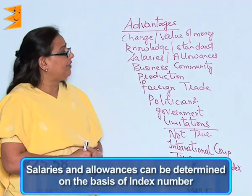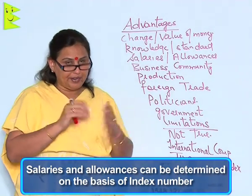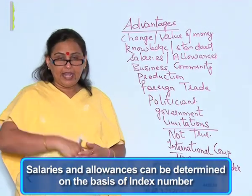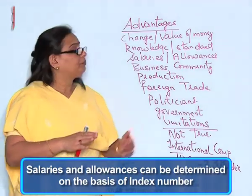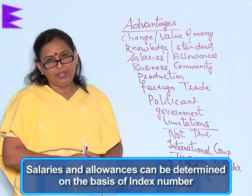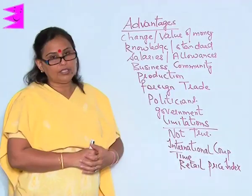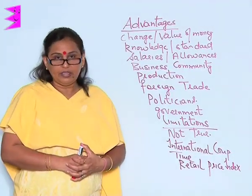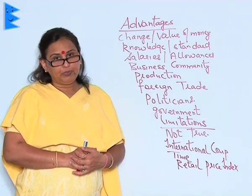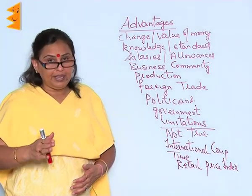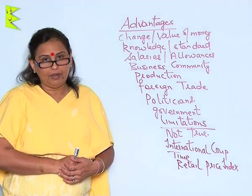The salaries and allowances of the people can be determined, fixed, and increased accordingly on the basis of the index number. The dearness allowance which is announced by the government twice a year is based on the information provided by the index number.